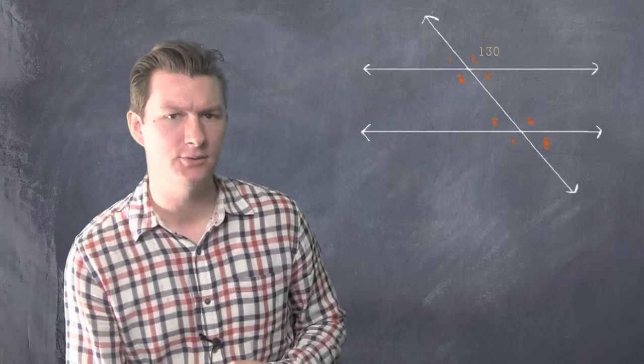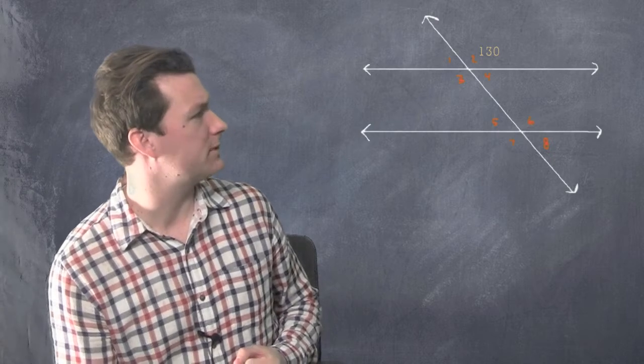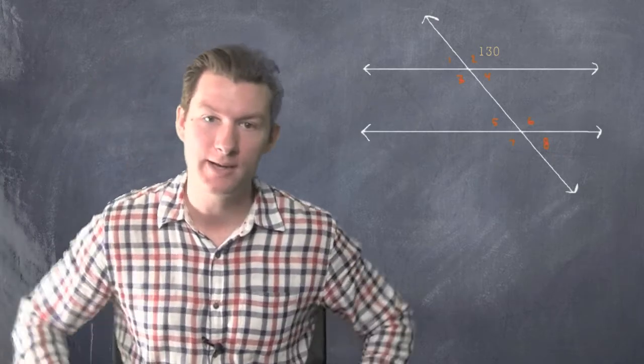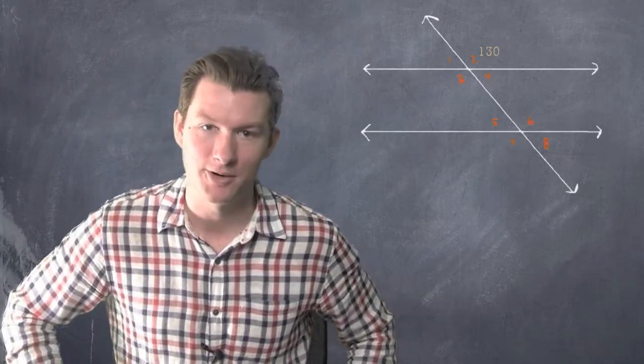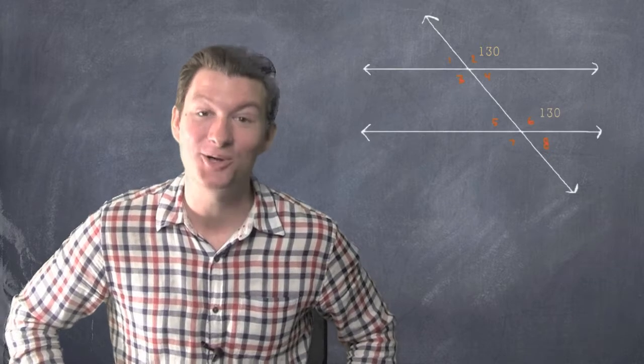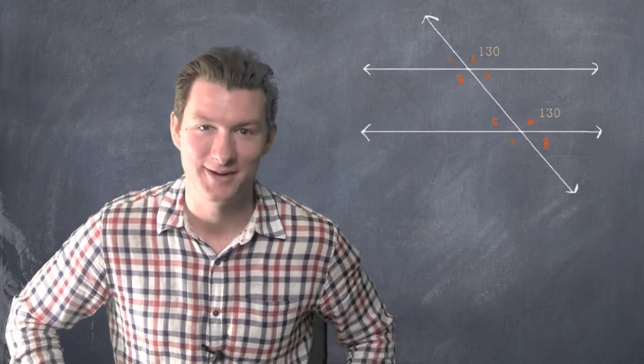Well, angle six is also top right. So two and six must be corresponding, and corresponding angles are equal. That was the easy part. So angle six is also 130 degrees, right?